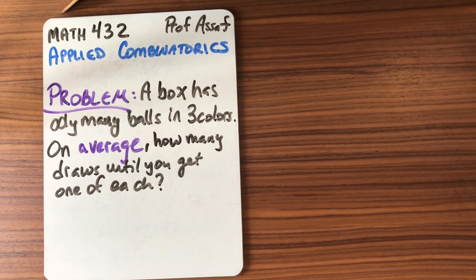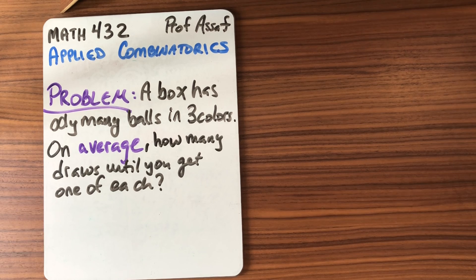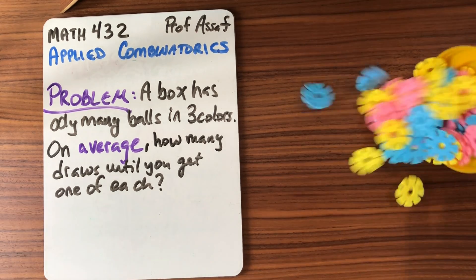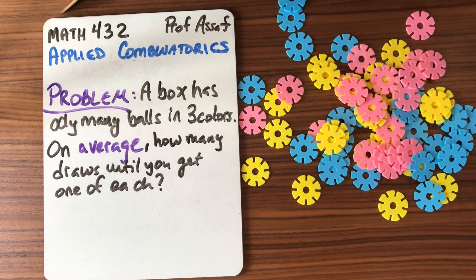This is Math 432, Applied Combinatorics. I'm Professor Asaph, and the problem of the day is the following: A box has infinitely many balls in three colors. On average, how many draws until I get one of each color?